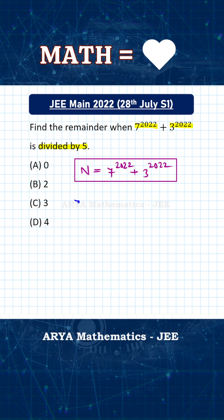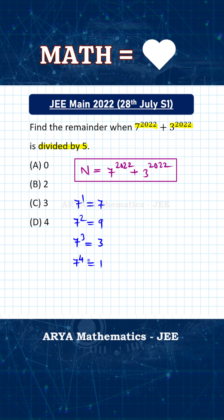For 7 raised to 1, the digit at unit place is 7. For 7 squared it is 9. For 7 cubed it is 3, and for 7 raised to 4 the digit at unit place is 1. Once you get 1, the same pattern repeats. So the unit digits for different exponents of 7 cycle as 7, 9, 3, 1 — then 7, 9, 3, 1 — and so on.